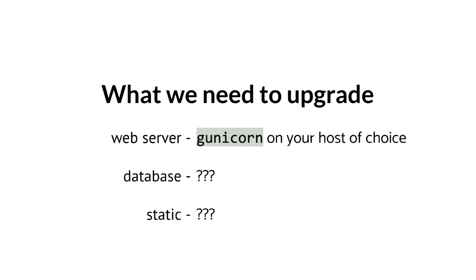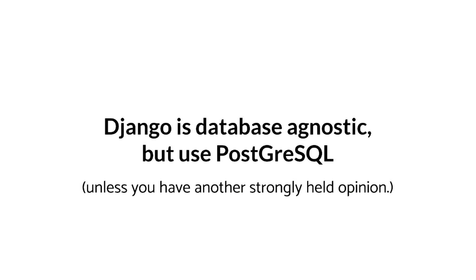Now that we have a web server, we need to handle the database and the static. If you have no other factors driving you towards a particular database, please just use Postgres — it'll make your life so much easier. From the last two Django developer surveys, Postgres is the most popular database. The documentation says it has the most support, which is a really good indicator of where to put your eggs.